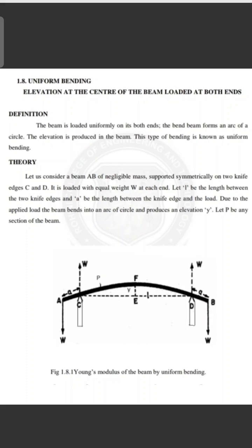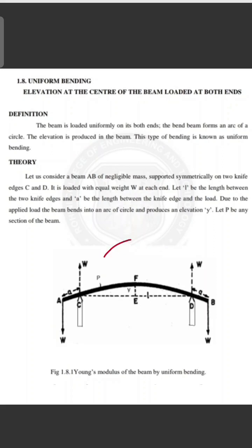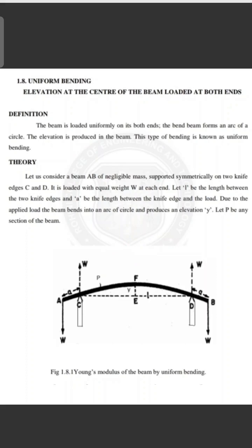How do we derive the expression for elevation? First, the definition of uniform bending: the beam is loaded uniformly on both ends. If there is a beam, we load the two sides. In non-uniform bending, we load the center point. This is the difference between uniform bending and non-uniform bending.